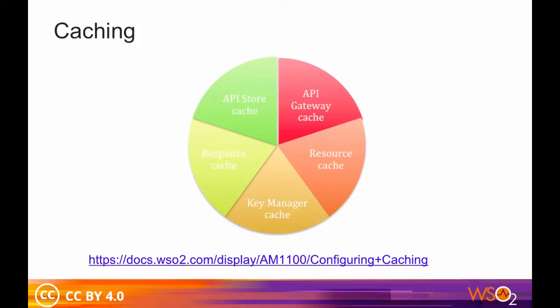Since the entire load of traffic to APIs goes through the API Gateway, this verification process needs to be fast and efficient in order to prevent overhead and delays. The API Manager uses caching for this purpose, where the validation information is cached with the access token, API name, and version, and the cache is stored in either the API Gateway or the KeyManager server.